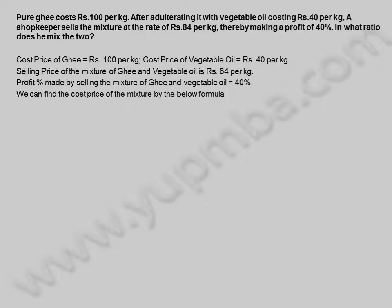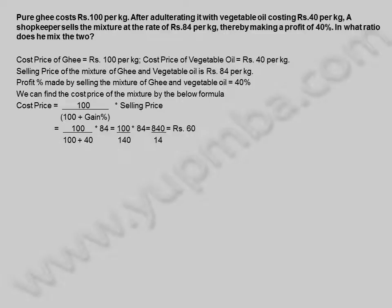We can find the cost price of the mixture by the formula: cost price = (100 / (100 + gain%)) × selling price = (100 / (100 + 40)) × 84 = (100 / 140) × 84 = 840 / 14 = 60 rupees. Cost price of the mixture is 60 rupees per kilogram.